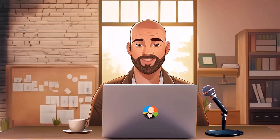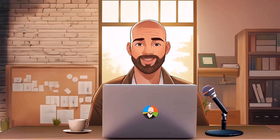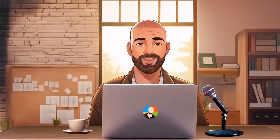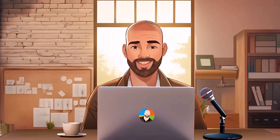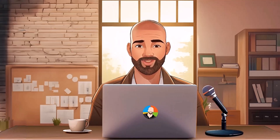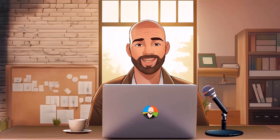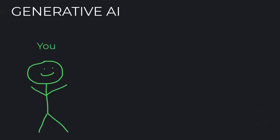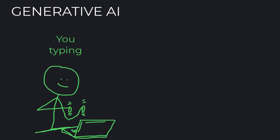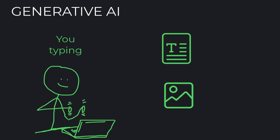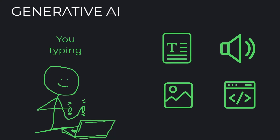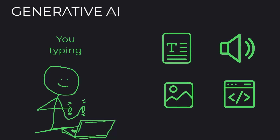Let's kick things off with generative AI, because you can make the case that this type is the one currently dominating the AI conversation and getting all the headlines. Generative AI essentially does what the name implies — this type of AI will generate, think create, new content. For example, text, images, audio, or code through the instructions that you give it. Put another way, you type in what you want, and the AI will create it.